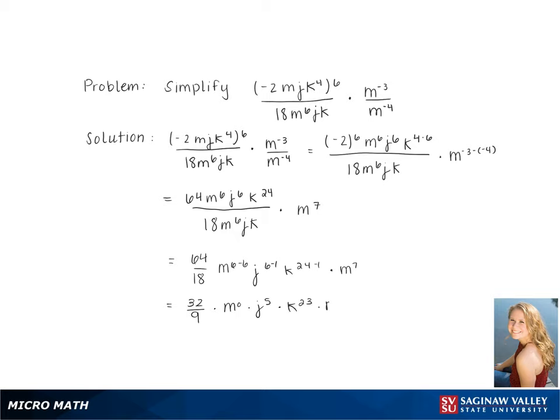Simplifying gives us 32 over 9 times m to the 0 times j to the 5th times k to the 23rd times m to the 7th.